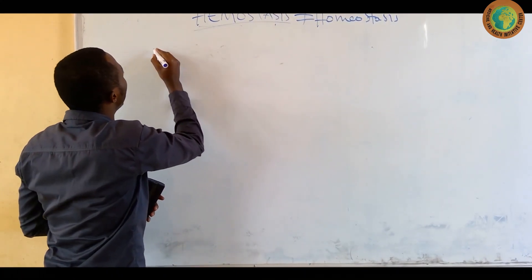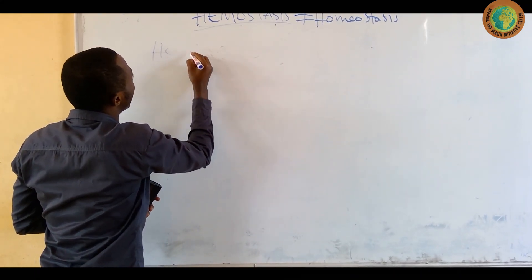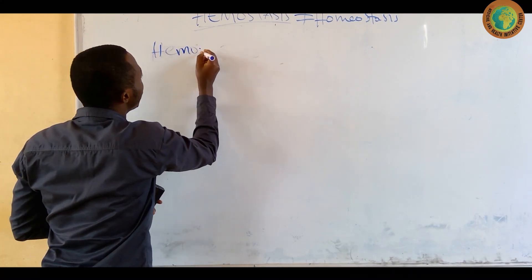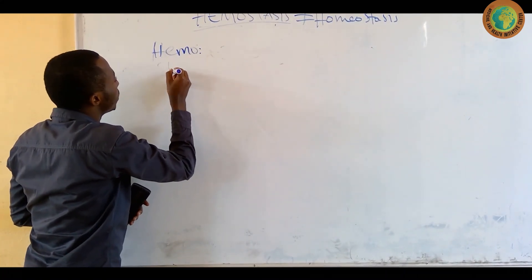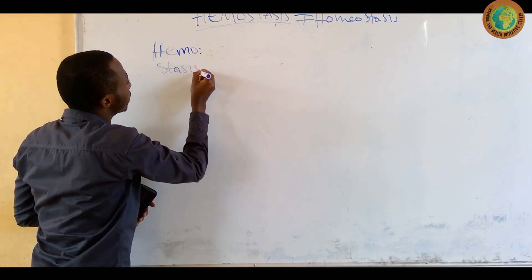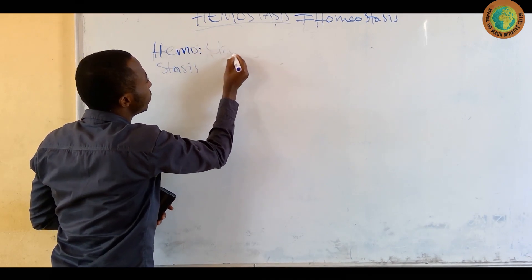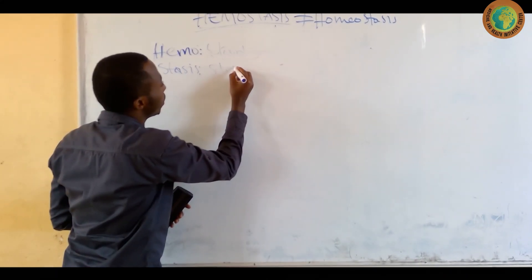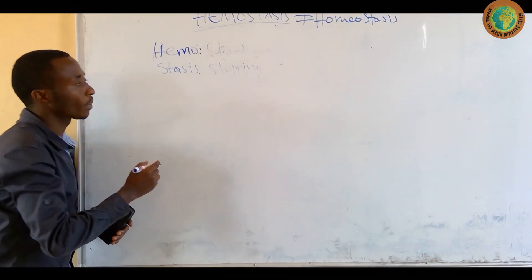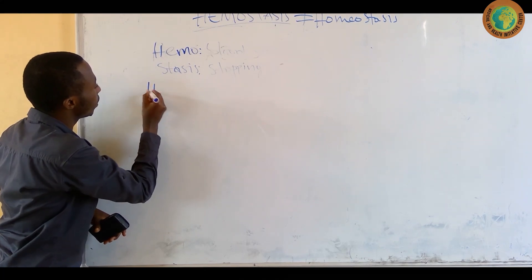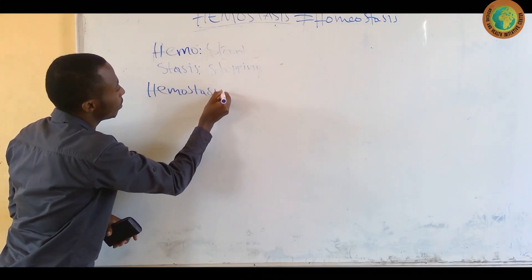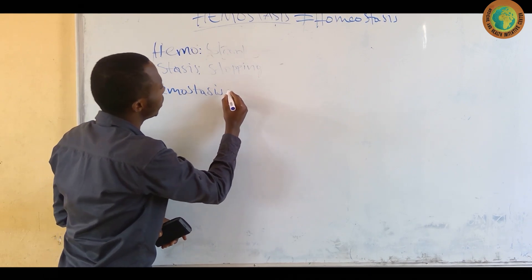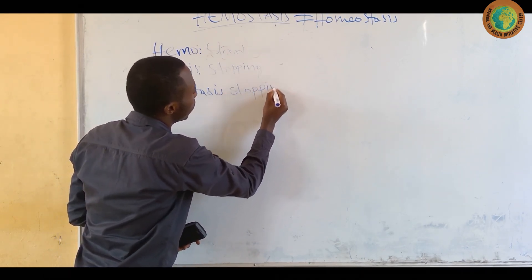Hemostasis is composed by two words. The first one is hemo. The second one is stasis. Hemo means blood. Stasis means to stop. So hemostasis is literally stopping blood.